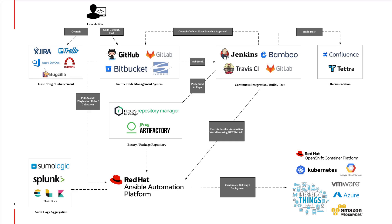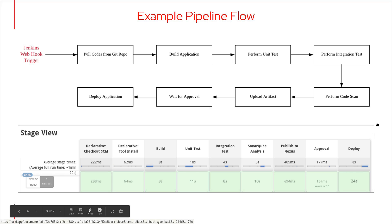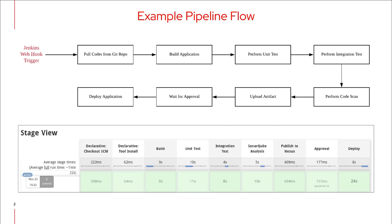One possible workflow will look like this. Upon a Jenkins or webhook trigger, the code gets pulled from a Git repo, the application gets built, unit tests get conducted within the Jenkins pipeline, followed by integration tests and a code scan, before the artifact is uploaded into the Nexus repository. Then we wait for approval to deploy to production. Once approval is granted, the application gets deployed by Ansible Tower.